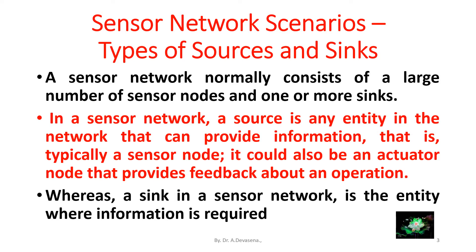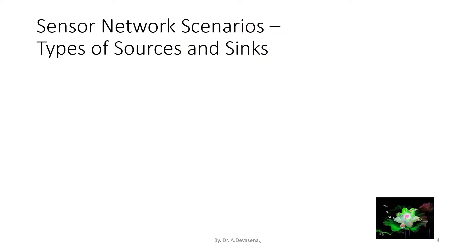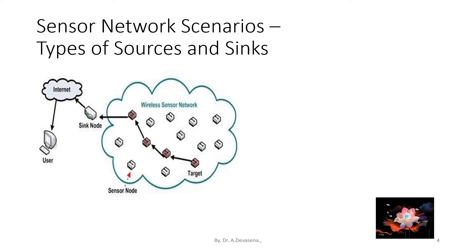A sink in a sensor network is the entity where information is required. Here is a representation of sources and sinks. The sensor nodes present in this sensor network represent a source node. The sensor nodes provide the information that has to be reached to the user, and the sensor nodes pass the information to the sink node. The sink node processes the received information gathered from the source node and then forwards it to the user through the internet.